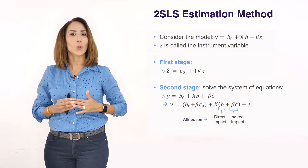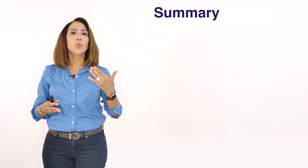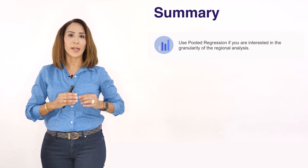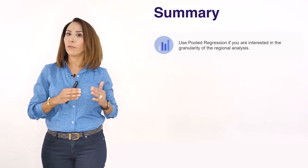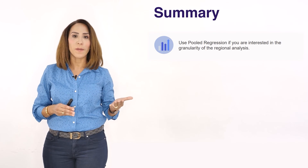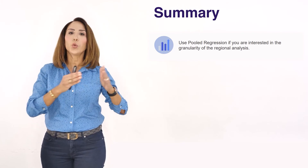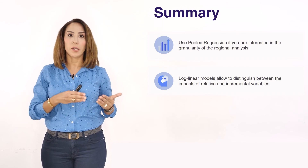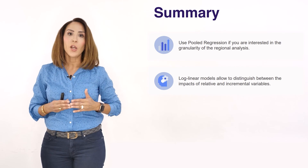That's how 2SLS allows us to estimate both direct and indirect impacts. In order to adopt a contemporary approach to marketing mix modeling, it is advisable to depart from classic modeling and use more advanced techniques. Pool regression is recommended when you need granularity in regional analysis, such as by DMA or by store. It is also advisable to move away from additive models towards their multiplicative counterparts, as they better depict real-life behavior. Log-linear models help differentiate between relative and incremental variables and can also measure the synergy between pairs of variables.